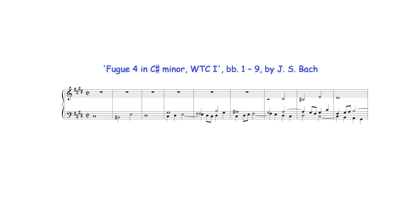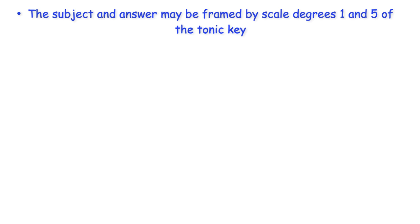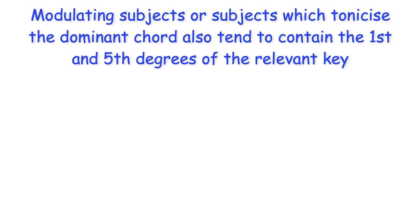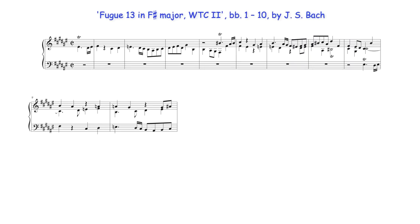A similar subject usage occurs in this fugue, although here, because of its shape, neither subject nor answer includes the other scale degree, with the subject beginning and ending on the first degree and the answer on the fifth degree. And finally, the subject and answer may be framed by scale degrees one and five of the tonic key. Here the subject begins on the fifth and concludes on the first, and the answer reverses this arrangement. Modulating subjects, or subjects which tonicize the dominant chord, also tend to contain the first and fifth degrees of the relevant key. We've already seen how the real answer here replicates in the dominant the move between degrees one and five of the tonic key.